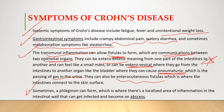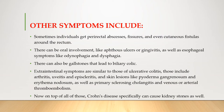Sometimes a phlegmon can form, which is a localized area of inflammation in the intestinal wall that gets infected and later leads to the formation of an abscess. Other symptoms of Crohn's disease include perirectal abscesses, fissures, and even cutaneous fistulas around the rectum.